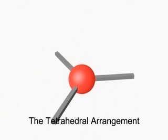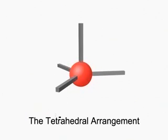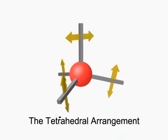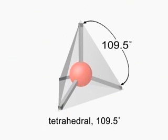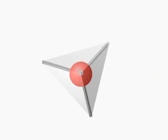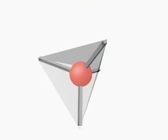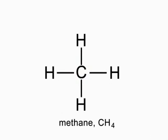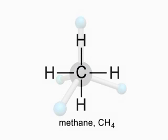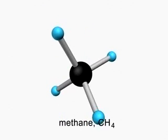Four electron groups around a central atom attain minimal repulsions in a tetrahedral arrangement, which has an ideal bond angle of 109.5 degrees. The tetrahedral shape is very common, especially in organic molecules. An example is methane, the simplest hydrocarbon.